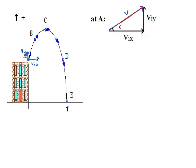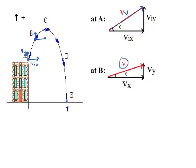At point B, gravity has slowed the vertical component down a little bit because it's pushing downwards. Does gravity work horizontally? Absolutely not. So velocity in the x direction looks the same, but velocity in the y direction will definitely be smaller because gravity is pushing down on it — slowing it down as it goes upwards and to the right. At B, it's the same triangle but just not quite as tall. To find the actual velocity at B, I need to find the hypotenuse or vector sum of Vx and Vy.